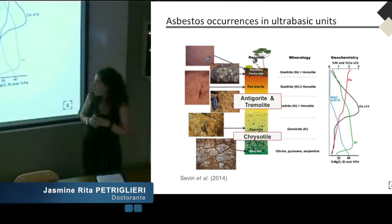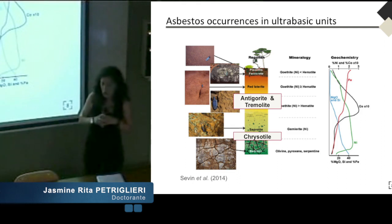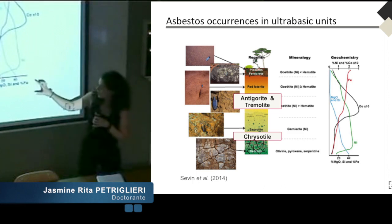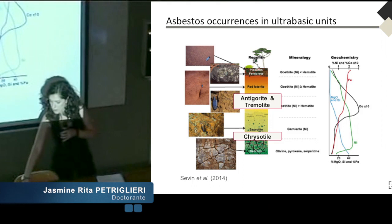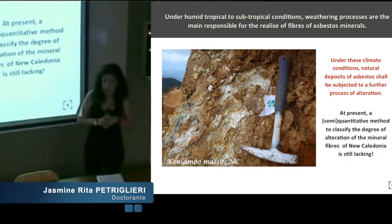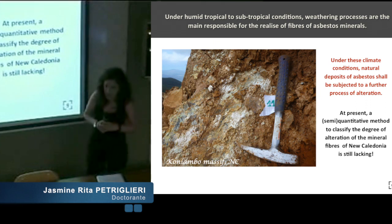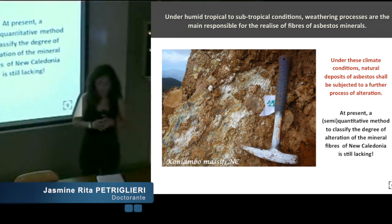This is a typical lateritic profile that we can find in New Caledonia geological units. We generally find chrysotile in the form of veins and veinlets embedded in the peridotite, altered peridotite, saprolite and bedrock horizons. We generally find antigorite and tremolite minerals in the form of dikes or in shear planes in the red and yellow limonite laterite. Under subtropical conditions, weathering processes are the main responsible for the release of fibers from asbestos minerals.